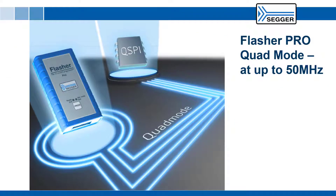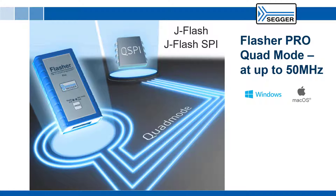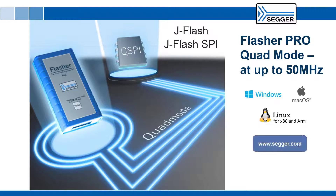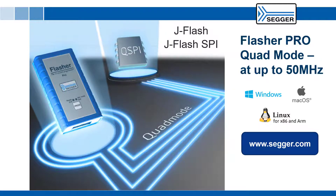Flasher Pro is very easy to set up and operate using the matching SEGGER software tools like JFLASH and JFLASH SPI, which are available cross-platform for Windows, macOS, Linux for x86, and Linux for ARM processors. To learn more about the SEGGER Flasher Pro or any of our other hardware or software products, please visit www.segger.com. Thank you.